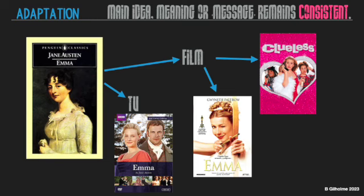Some examples: Jane Austen's Emma — we have a TV miniseries, a fairly straight film adaptation, and then Clueless up on the right, which is a modern adaptation of Emma. The reason Clueless is an adaptation is that the composers were trying to stick with the original ideas of Jane Austen but create it for a modern context. So adaptation is really about keeping the idea consistent but adapting it to suit a different context, which quite often means a different medium.